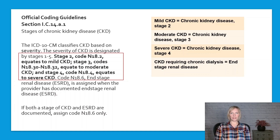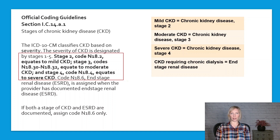According to the guidelines, Stage 2 equates to mild CKD, Stage 3 equates to moderate CKD, and Stage 4 equates to severe CKD. Therefore, Stage 2 chronic kidney disease can be assigned if the CKD is specifically identified as Stage 2 or if there is documentation of mild chronic kidney disease. Similarly, chronic kidney disease Stage 3 unspecified can be assigned if the CKD is specifically identified as Stage 3 or if it is specified as moderate chronic kidney disease. Chronic kidney disease Stage 4 can be assigned if CKD is specifically identified as Stage 4 or if it is specified as severe CKD.